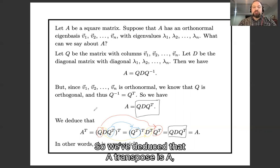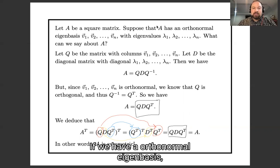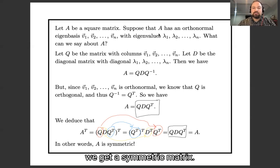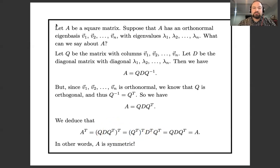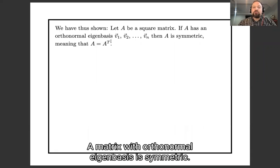So we've deduced that A transpose equals A — in other words, A is a symmetric matrix. If we have an orthonormal eigenbasis, we get a symmetric matrix. A matrix with an orthonormal eigenbasis is symmetric.